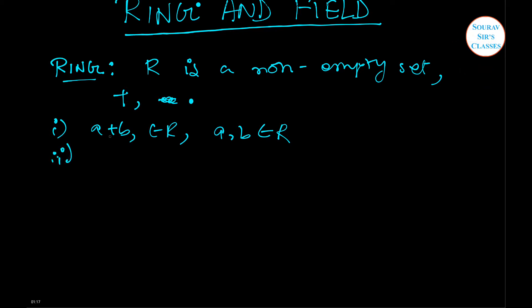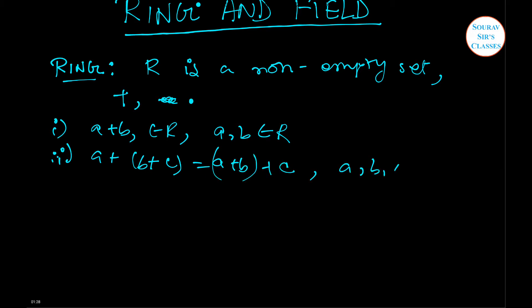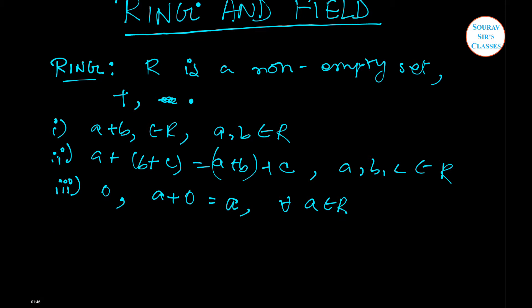The second condition is the distributive law for any a, b, c belonging to R. Please note this down. Number three is that there is an element denoted by 0 such that a plus 0 equals a for all a belonging to R. Number four is that for each element a in R there exists an element minus a in R such that a plus (minus a) equals 0.